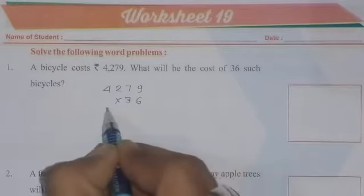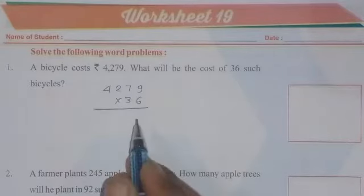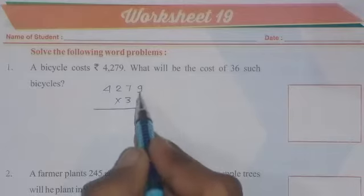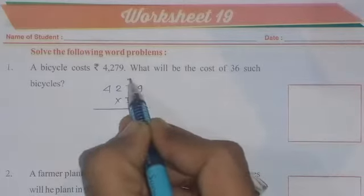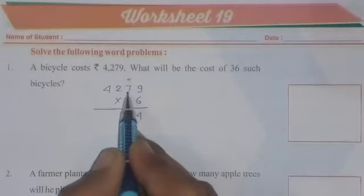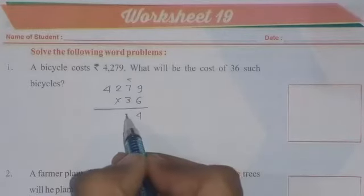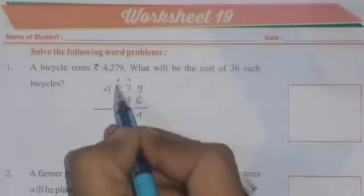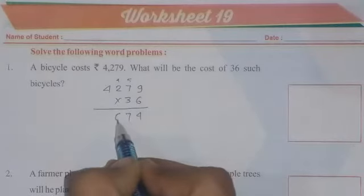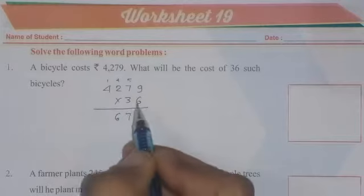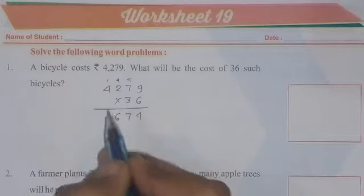So I am going to multiply and you have to see. 6 times 9 is 54, so 4 here and 5 in carry. 6 times 7 is 42 plus 5 is 47, so 7 here and 4 in carry. 6 times 2 is 12, 12 plus 4 is 16, so 6 here and 1 carry. 6 times 4 is 24 plus 1 is 25.